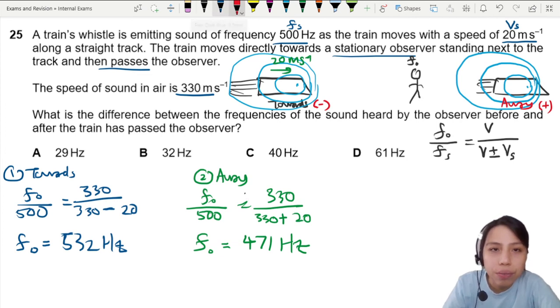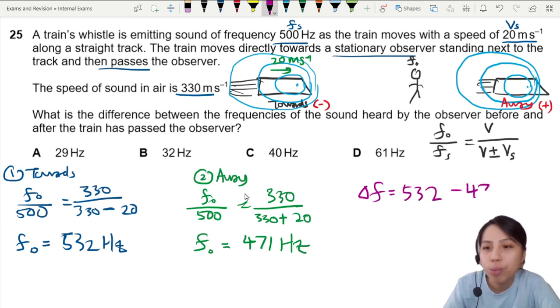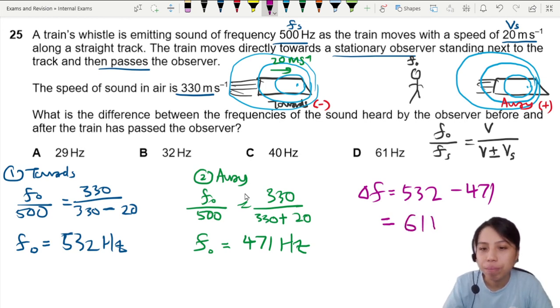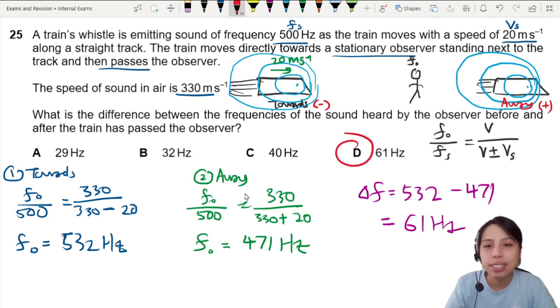So we need to find the difference or the change in frequency. You just need to take 532, just take the bigger one minus the smaller one. This will give 61 Hertz. Best choice, D.